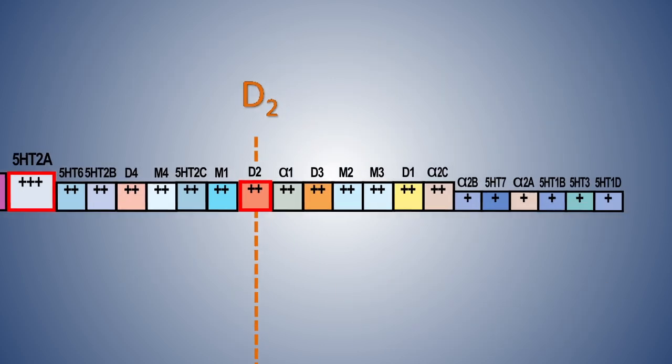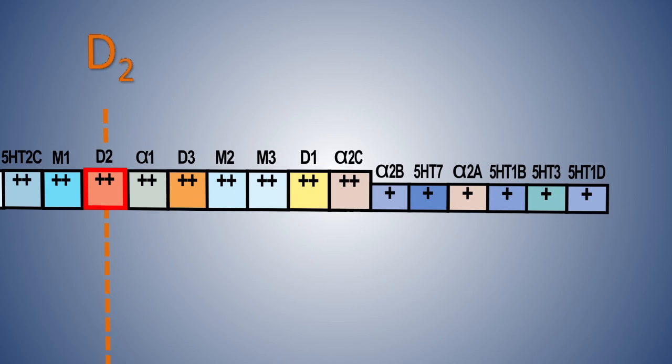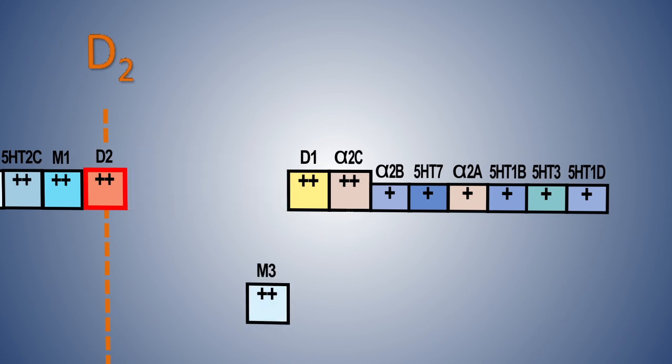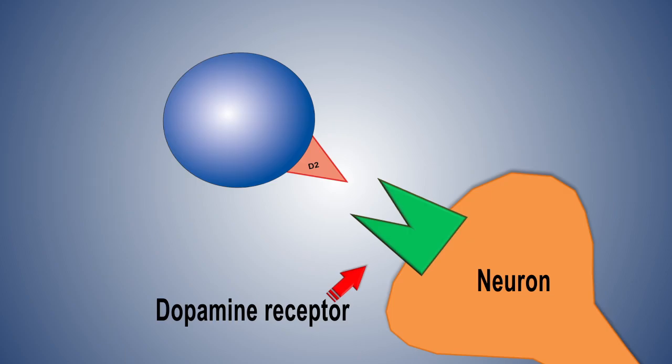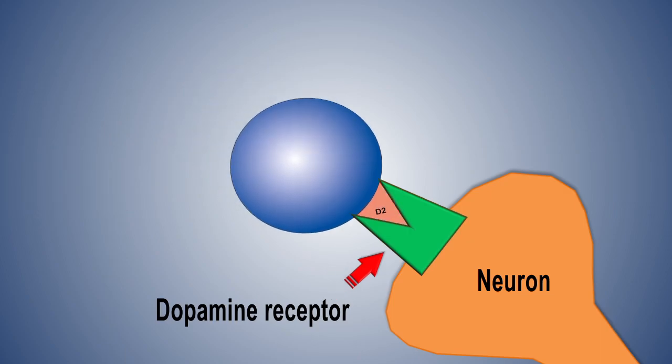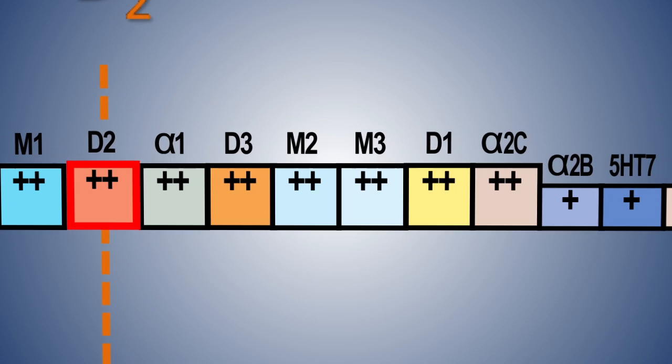All of these receptors that you see to the right compared to D2, they don't bind very tight. So when you dose a drug to block D2, the effects of these receptors will be very few.